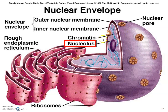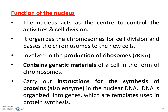Looking at the structure of the nucleus: inside we have the nucleolus; outside the nucleus we have the outer nuclear membrane and inner nuclear membrane embedded with nuclear pores. The outer membrane continues to the rough endoplasmic reticulum, where ribosomes are found on the surface. The main function of the nucleus is to control cell activity and cell division. It organizes chromosomes for cell division, passes chromosomes to new cells, is involved in ribosome production, contains genetic material in the form of chromosomes, and carries out instructions for protein synthesis.